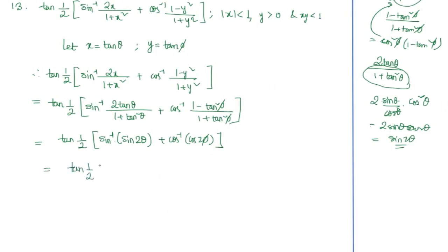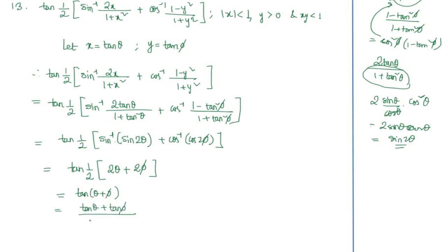sin inverse(sin 2θ) gives 2θ, and cos inverse(cos 2φ) gives 2φ. Taking 2 common from 2θ + 2φ and dividing by the 2 outside in the half, we get tan(θ + φ). By the addition formula, tan(θ + φ) = (tan θ + tan φ)/(1 − tan θ · tan φ). Since tan θ = x and tan φ = y, this beautifully simplifies to (x + y)/(1 − xy), which is the final result.